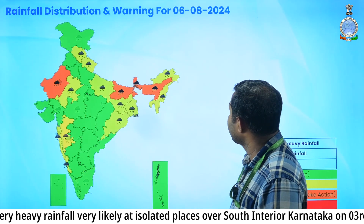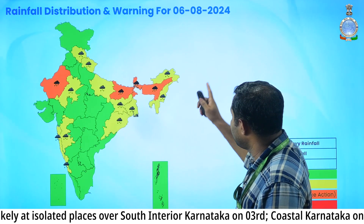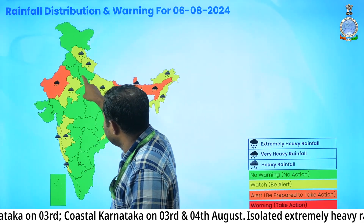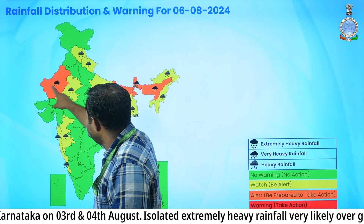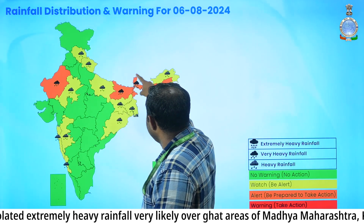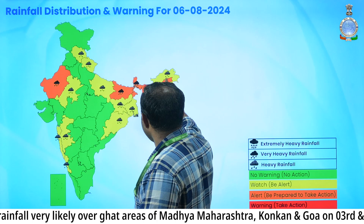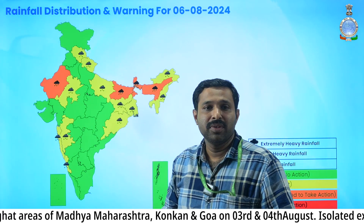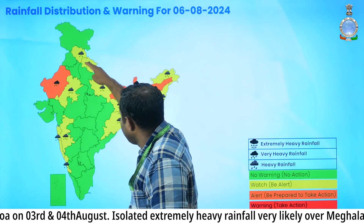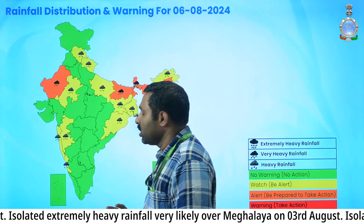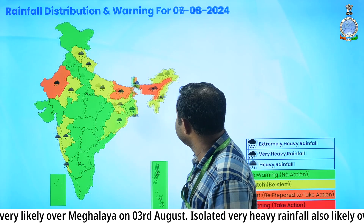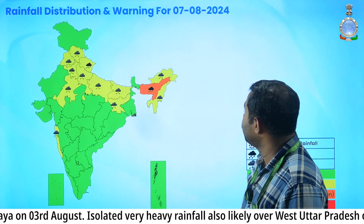Coming to warnings issued for 6th August: regions including west Rajasthan, Bihar, Sub-Himalayan West Bengal, Sikkim, Arunachal Pradesh, and Assam-Meghalaya are expected to receive very heavy rainfall. Regions highlighted in yellow are expected to receive heavy rainfall.